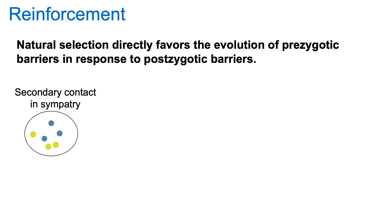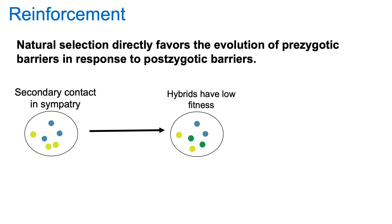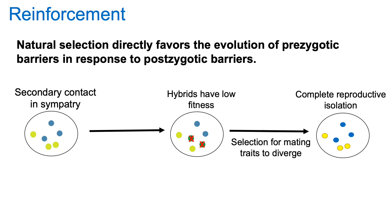For those of you who are unfamiliar with reinforcement, this describes natural selection that directly favors the evolution of prezygotic barriers in response to postzygotic barriers. So after secondary contact, these two lineages form some hybrids, but the hybrids have low fitness and they die. This then causes selection for mating traits to diverge and causes complete reproductive isolation, because we now have really strong prezygotic and postzygotic barriers in place.